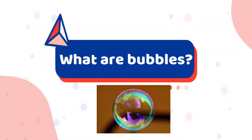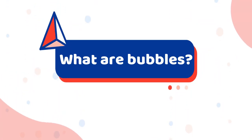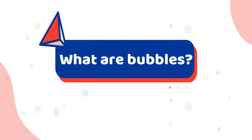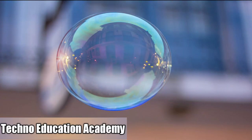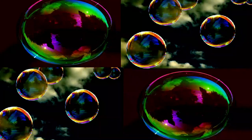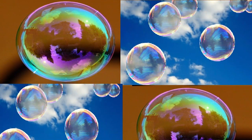First of all, what are bubbles? A soap bubble is an extremely thin layer of soapy water that encloses a given volume of air. As such, the bubble forms a hollow sphere with a multicolor surface — a surface that appears to gradually change color when viewed from different angles.